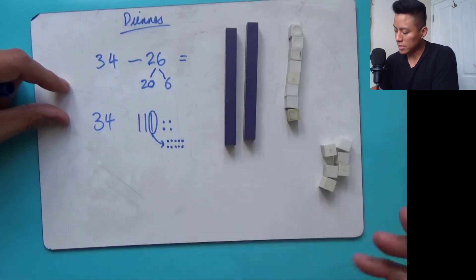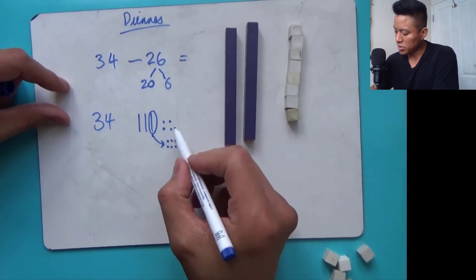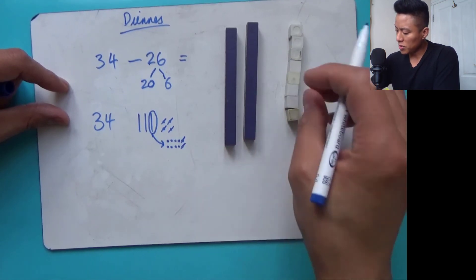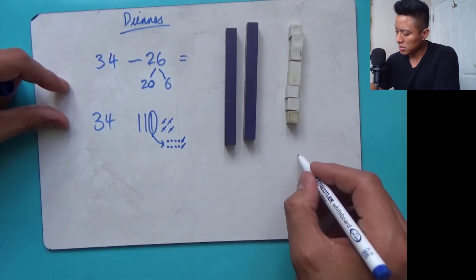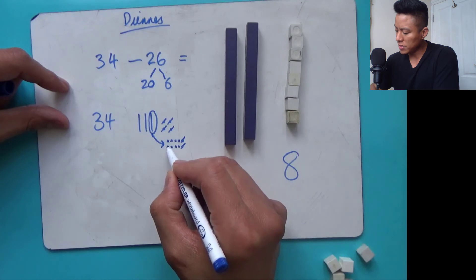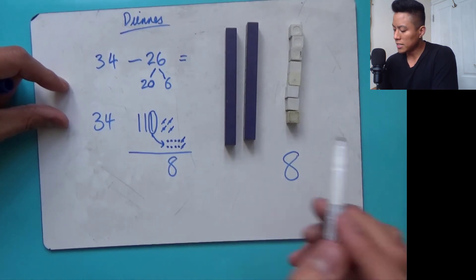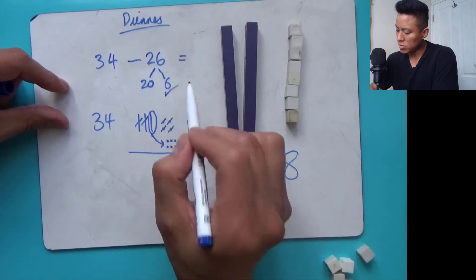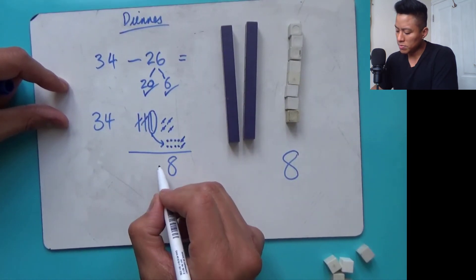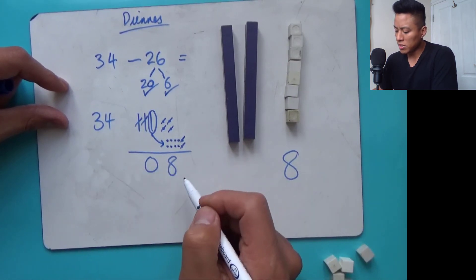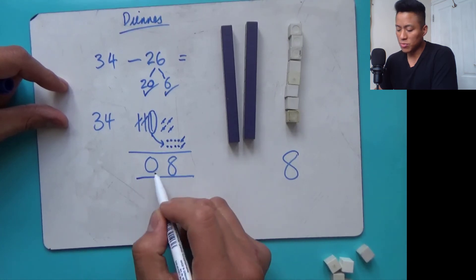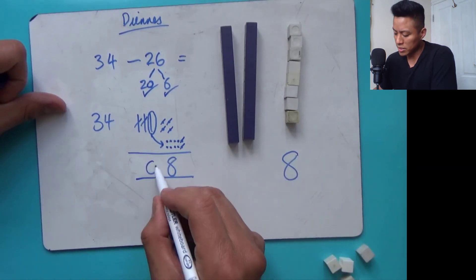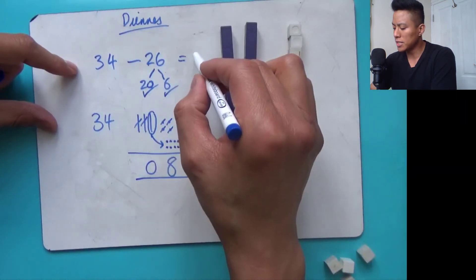Now we're going to subtract the six, just like we've done with the deans. Cross off six — one, two, three, four, five, six. What have we got left? We've got eight in the ones — eight. Now we're going to subtract two tens: one ten, two tens. I'll tick that to say I've done that. So we've got zero tens left. Our answer is eight. We don't really need the zero to hold the place of the tens. So 34 subtract 26 is eight.